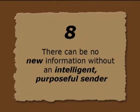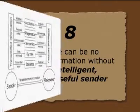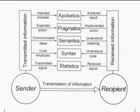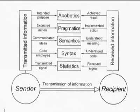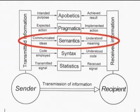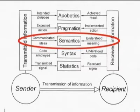Number eight: there can be no new information without an intelligent, purposeful sender. That's what we observe in all known systems. There is a sender and also one or more recipients. We see all the five levels are important on both sides — on the sender side and also on the recipient side. For example, on the level of semantics, you see the communicated ideas on the sender side, and on the recipient side the question is: is this meaning understood?